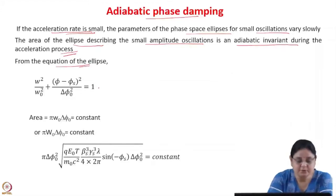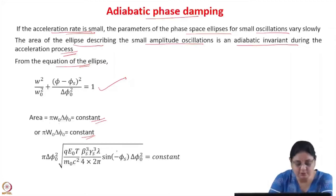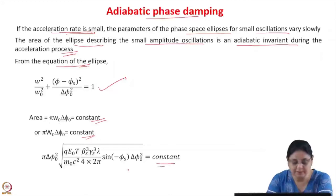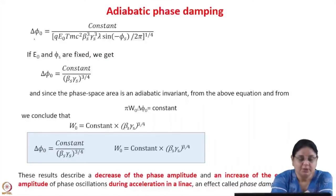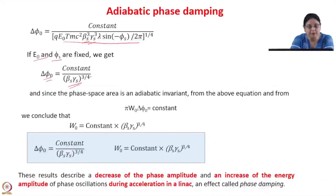From the equation of the ellipse, since the area of the ellipse is constant, we can write pi times w0 squared times delta_phi_0 equals a constant, or equivalently pi times w0 times delta_phi_0 equals a constant.